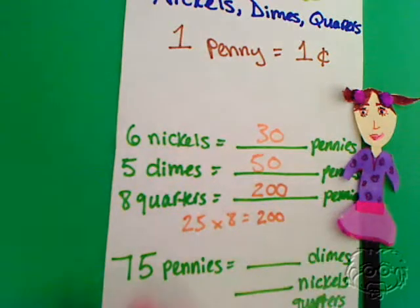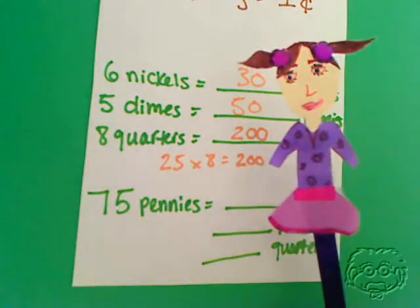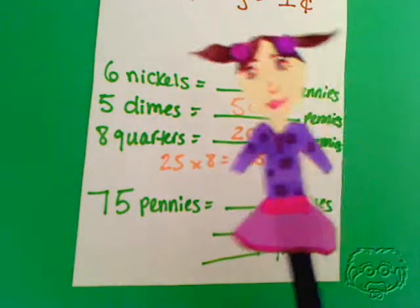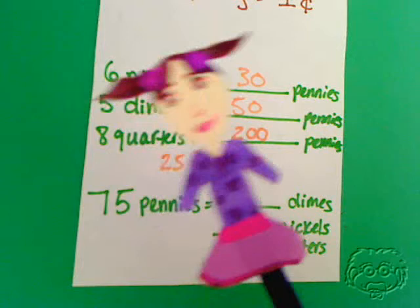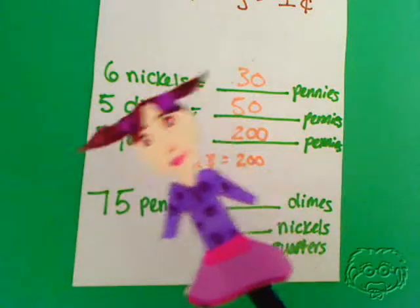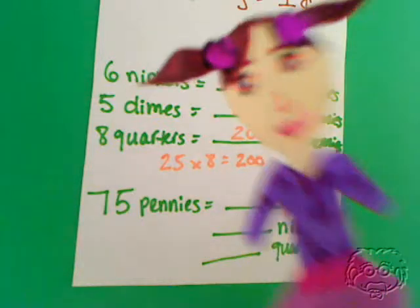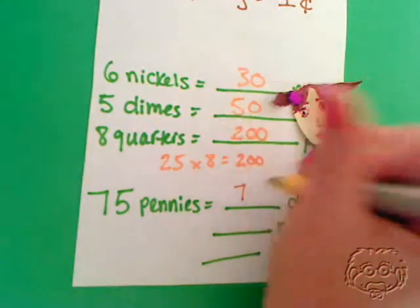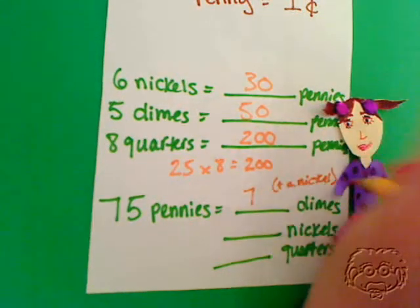Now, 75 pennies. Here's where it gets a little tricky. Remember, a dime is worth 10 cents, and 75 is not evenly divisible by 10. So how many dimes can we make out of 75 pennies? If we get rid of the 5, we'd have 70 — how many times can 10 go into 70? That's 7. So there are 7 dimes, plus a nickel, or 5 pennies left over. So 7 dimes with 5 cents left over.